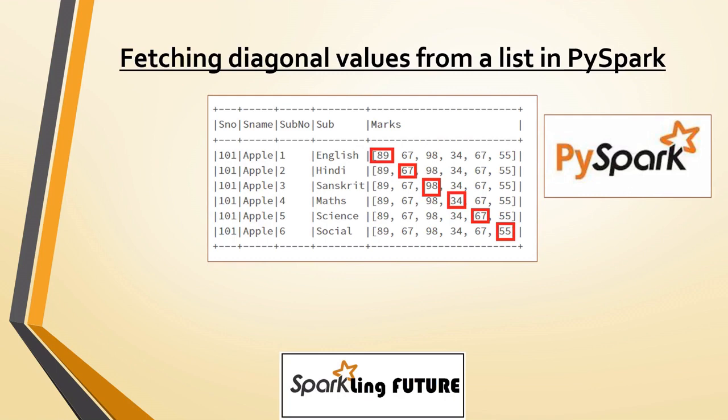Friends, in today's video we will see how to fetch the diagonal values from a list in PySpark. Let's say you have a dataset like this. This is a very simple dataset, but in real time you will have a list of lists in a particular column and you need to fetch one particular item from the list and perform some transformation on top of it. So this example will help you to work on such scenarios.